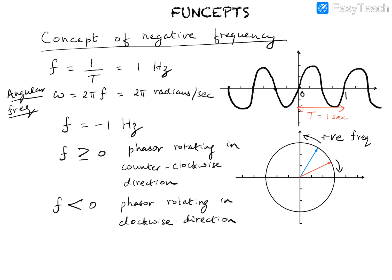The counter-clockwise direction of rotation corresponds to positive frequencies, and the clockwise direction of rotation for the phasor corresponds to negative frequencies. The way to visualize or interpret positive and negative frequencies is in terms of the phasor rotating at a certain rate in the counter-clockwise and clockwise directions respectively. To emphasize again: negative frequencies do not exist in reality, but they are more of a mathematical convenience, as we will see in future lectures.